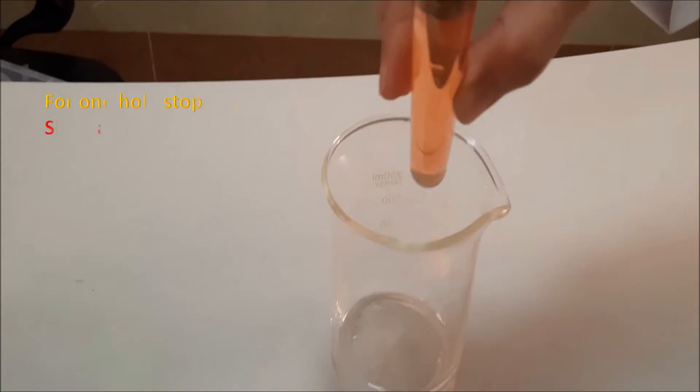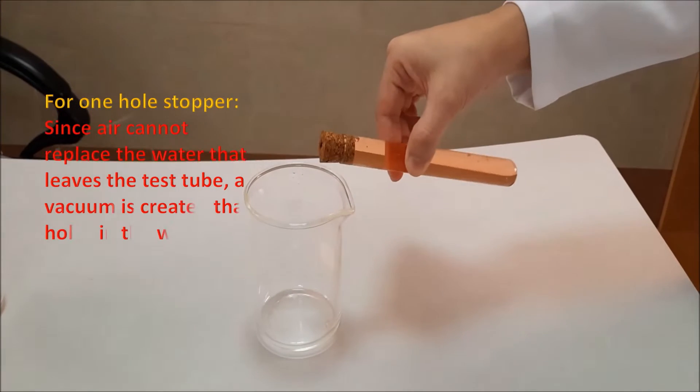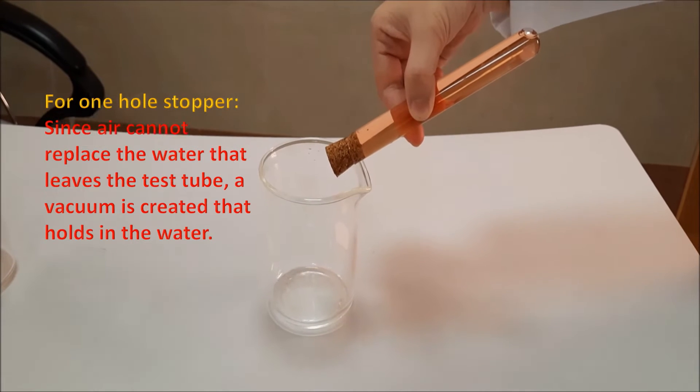For the one-hole stopper, since air cannot replace the water that leaves the test tube, a vacuum is created that holds in the water.